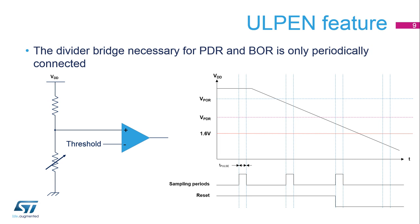In STM32G0 devices, the reset monitoring circuitry BOR and POR/PDR can be enabled in a periodic sampling mode. This mode is activated by setting the ULPEN bit to 1. The resistor bridge necessary for their functionality is powered only during a short time periodically, consequently reducing the power consumption.